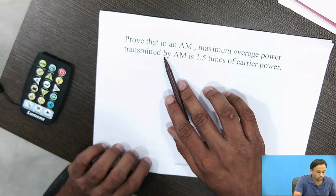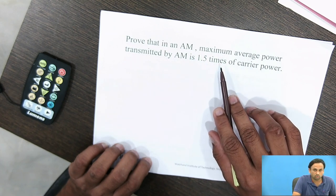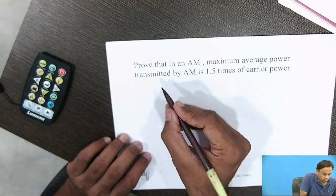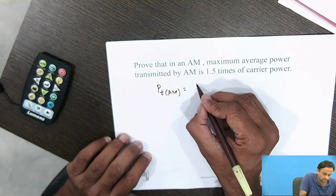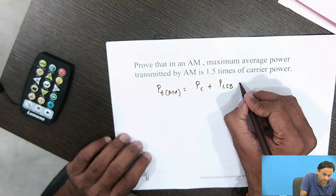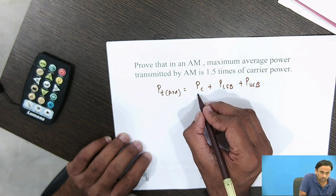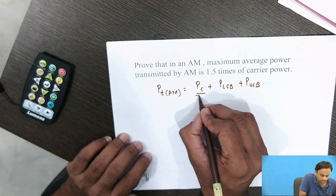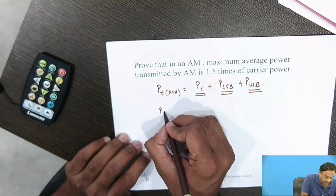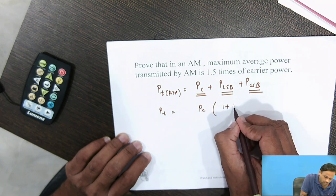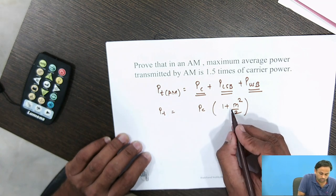We have to prove that the maximum average power transmitted by AM is 1.5 times the carrier power. The total power transmitted by the AM signal is PC + P_LSB + P_USB — three components. Solving individually, the total power required to transmit an AM signal is PT = PC(1 + M²/2).